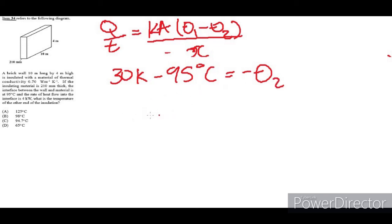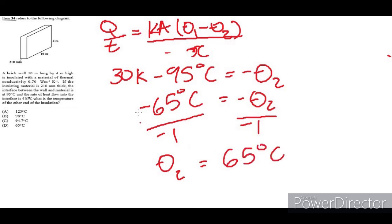We're trying to find theta 2. Now we'll get minus 65. I think that answer is in degrees Celsius, so I'll just keep that. Minus theta 2. Now we want theta 2, not negative theta 2, so divide both sides by negative 1. And we'll come to realize that theta 2 is simply 65 degrees Celsius, because the negative sign cancels the negative sign. So the answer is D, 65 degrees Celsius.